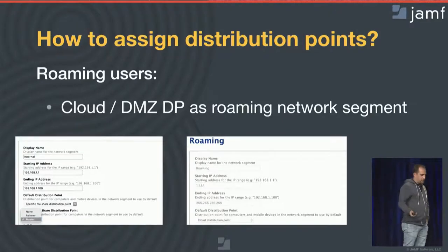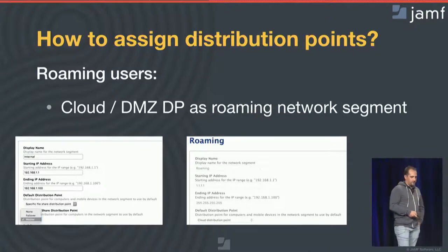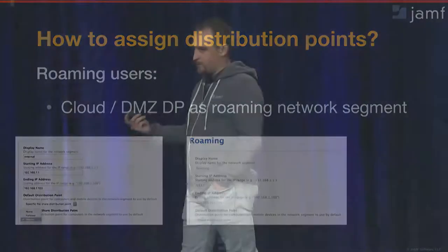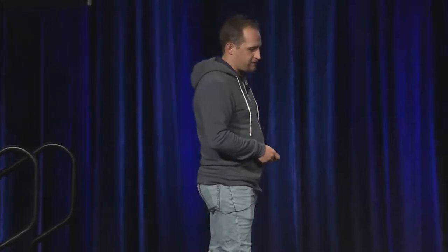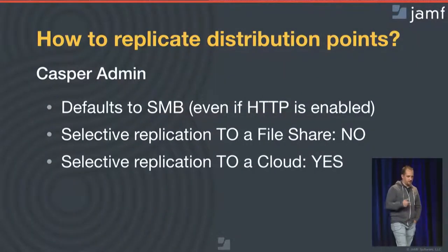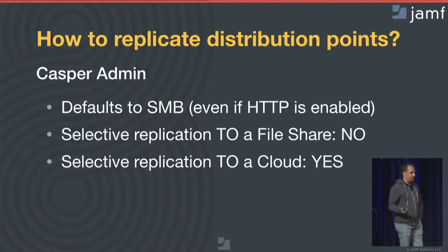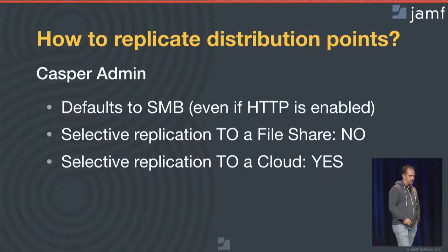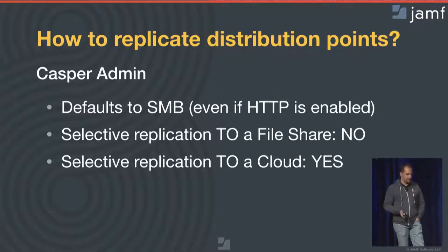Most likely, if you are going to manage multiple locations with roaming users, you will want to create something like this to make sure end users have access to their content. That brings us to replication. The tool within Jamf Pro is Casper Admin. A few things to highlight: even if you have HTTP enabled, you will actually fall back to SMB when using Casper Admin and doing replication across your distribution points.